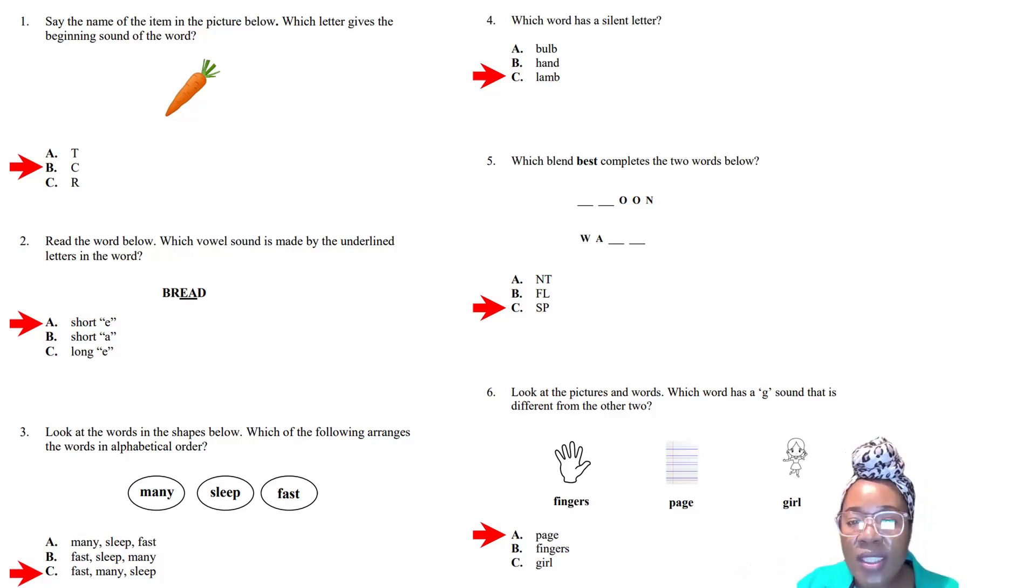Question six: Look at the pictures and words. Which word has a G sound that is different from the other two? Sound it out: fingers, page, girl. Listen to how the letter G sounds in those words, and you'll see it sounds different in the word page.